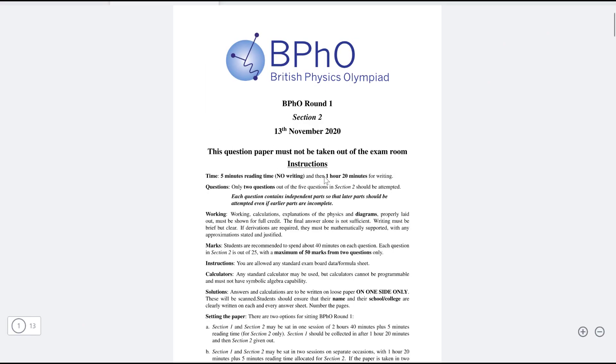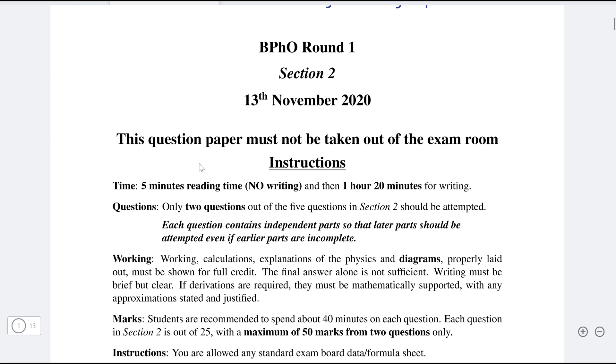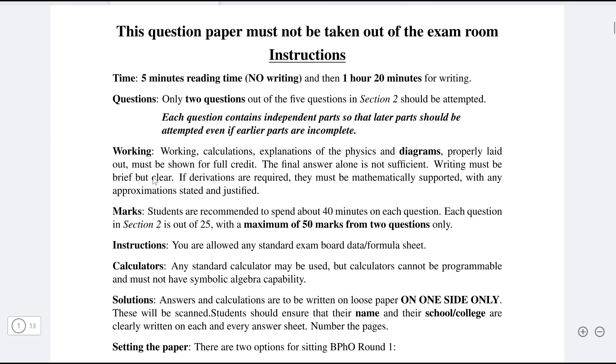Section 2 is quite different. First of all, before the start of section 2, you should get 5 minutes of reading time during which you are not allowed to write. And then afterwards, you get 1 hour and 20 minutes for actually solving the questions. During this 5 minutes, what you really need to do is to pick 2 questions which you will be solving. This is really, really important—pick 2 questions out of the 5 questions. Pick a topic that you are familiar with, pick a question that you might have seen a similar question before. But during that 5 minutes, it is imperative to decide which question you will be focusing on.